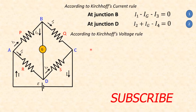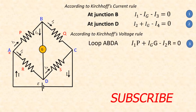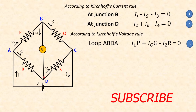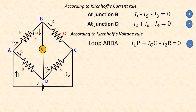Now we are applying Kirchhoff's voltage rule for loop A, B, D, A. For this loop the voltage rule gives: I1P, where P is the resistance and I1 is the current flowing; plus IGG, where G is the resistance and IG is the current flowing; minus I2R, where R is the resistance and I2 is the current flowing. Taking the current flow to be in the clockwise direction, I1P and IGG are positive but I2R is negative. So I1P plus IGG minus I2R is equal to 0. That is the third equation.